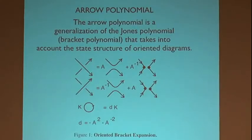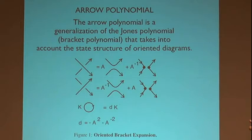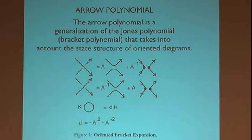We're going to look at a generalization of the bracket where I'm adding orientation structure. I'm looking at an oriented link and expanding the bracket as usual, except that I keep track of the combinatorial orientation structure even when it looks reversed — as it does when you take the B-smoothing. If you wrote out states that way, you'd have states with lots of little cusps in them. The question is: how much of that combinatorial structure can you keep and still have invariance under the Reidemeister moves?